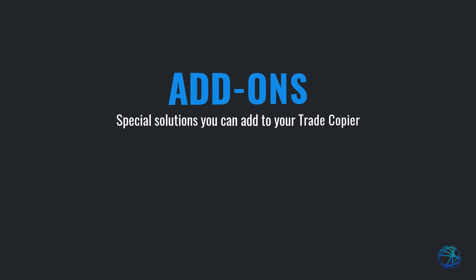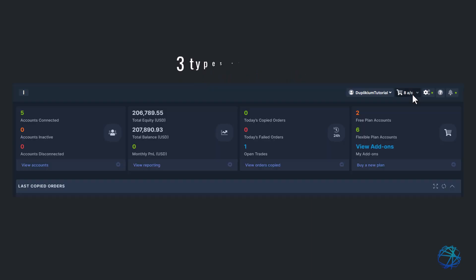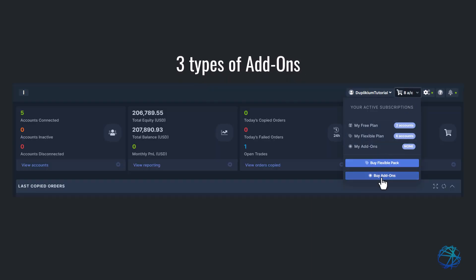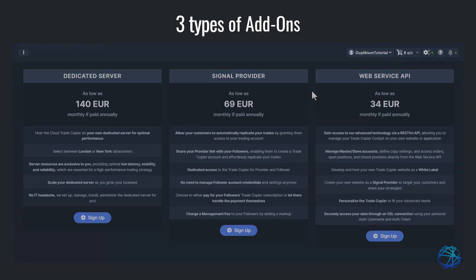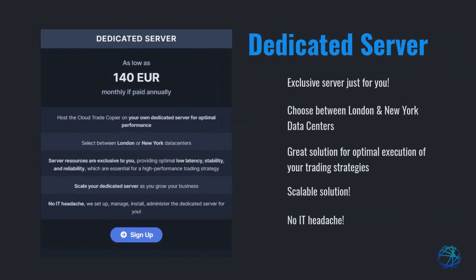This is an introduction to add-ons or special solutions you can get from Duplicium. Let's go to the add-ons page. The dedicated server add-on lets you host your trade copier on a server exclusive to you — the server resources are all yours. You have the option to select between the London or New York data centers, ensuring low latency, stability, and reliability. As your business grows, scaling the server is a breeze. And here's the best part: you don't have to worry about any IT headaches because we take care of everything for you.